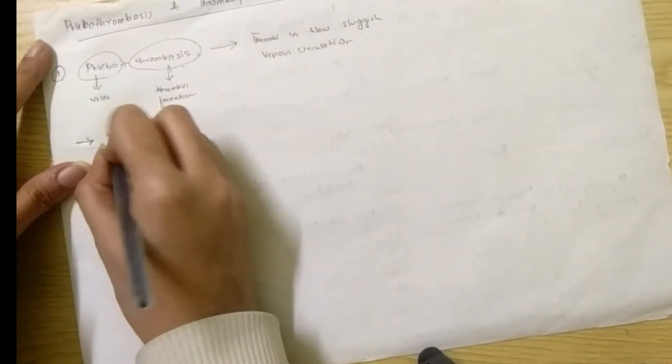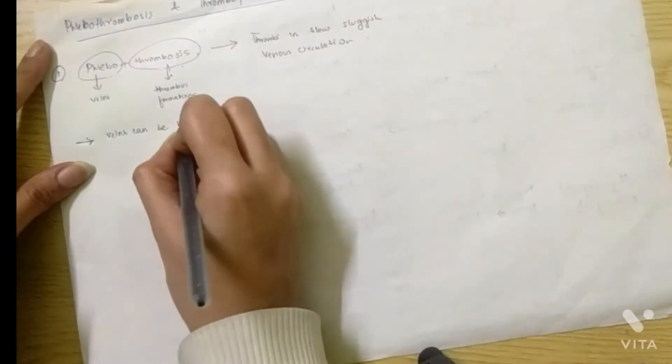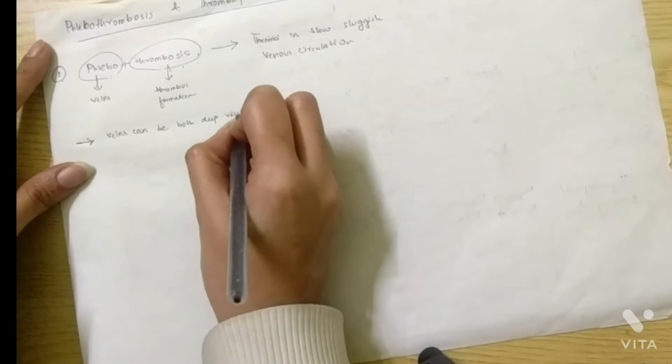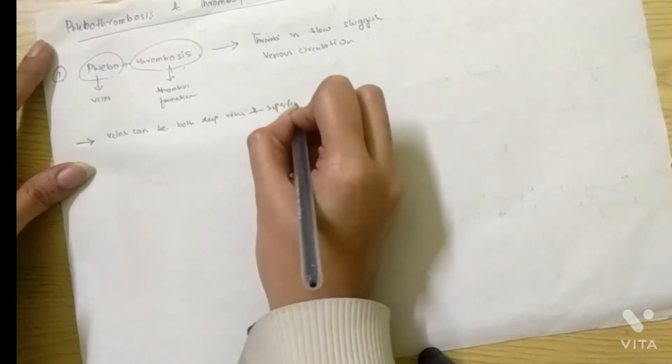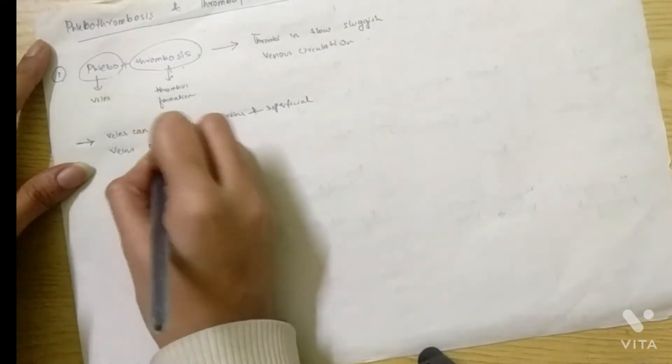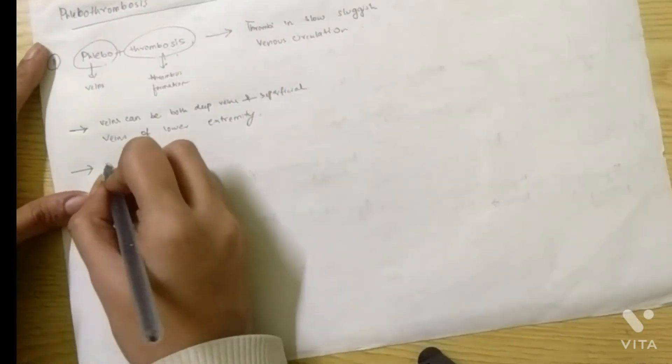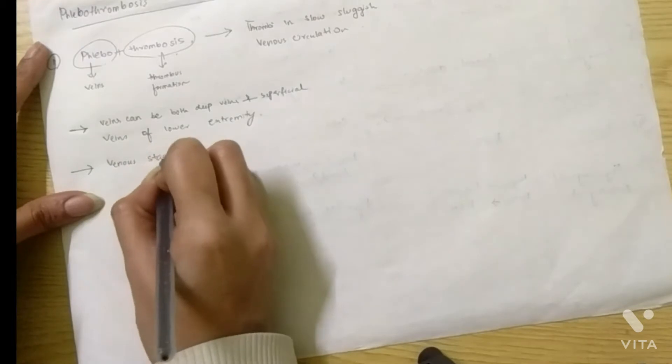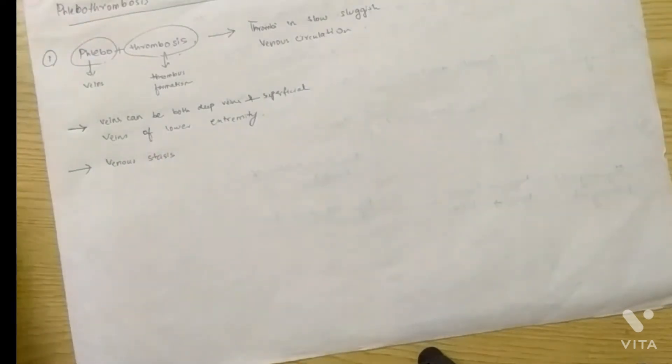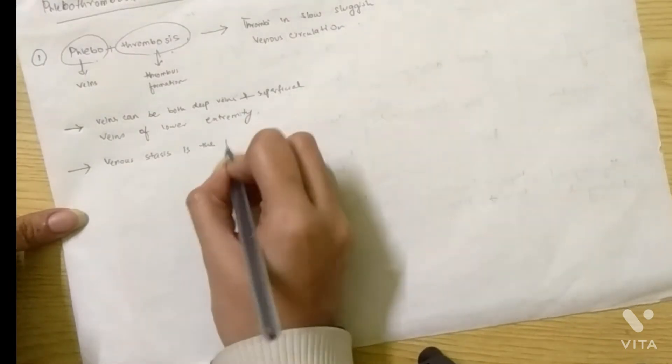First, the veins can be both deep veins and superficial veins of lower extremity. Second point is venous stasis is a predominating factor. If you have stasis in the blood flowing in the veins, then phlebothrombosis will occur, so venous stasis is the precipitating factor.